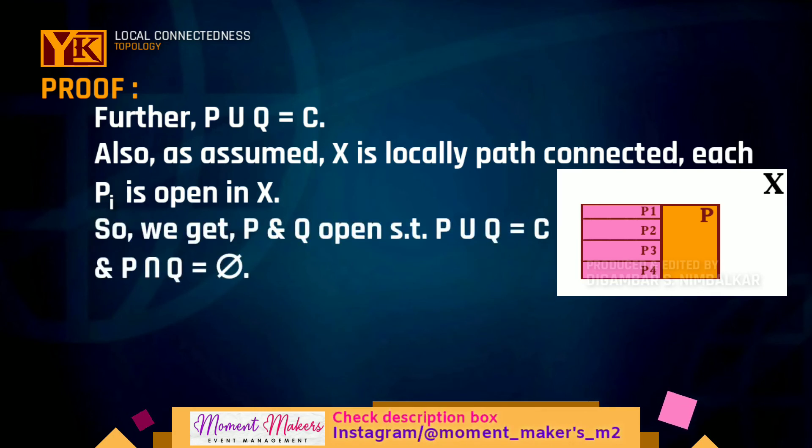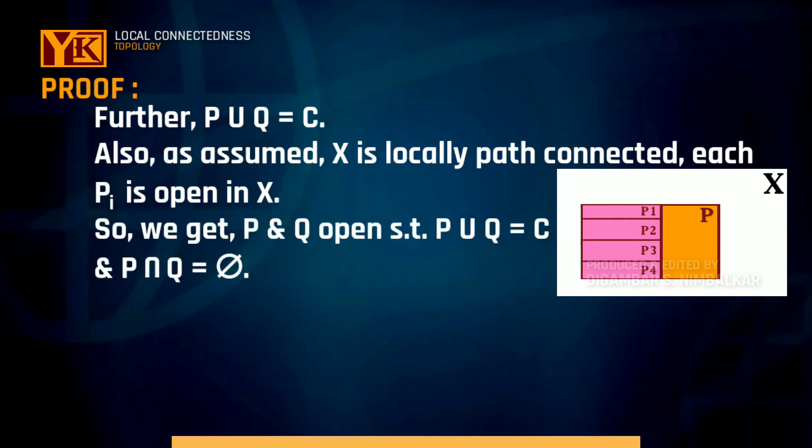So what we get: P and Q are disjoint non-empty open sets such that P union Q equals C and P intersection Q is empty.